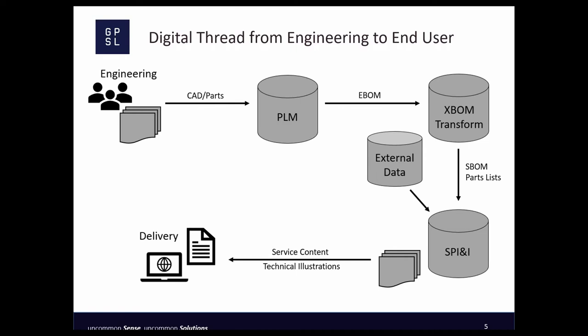From the Engineering Bill of Materials, we create one or more Service Bill of Materials. The Service Bill of Materials allows you to create service parts associated with the design parts in the engineering data, then organize them to reflect service rather than design. You can use applicability for different site configurations. You can group parts into kits to reflect how they would be ordered and delivered for service. You can create new end items or buy-parts that are not included in the engineering design. We can also generate parts lists from the engineering data. From the Service Bill of Materials, we can associate the actual downstream content — service content, technical illustrations, training content — any of these downstream artifacts with the parts.